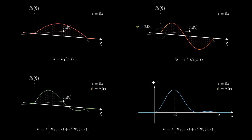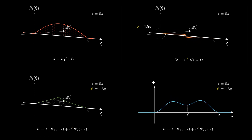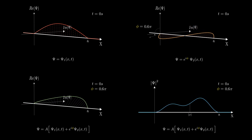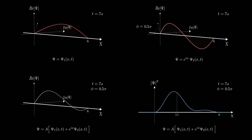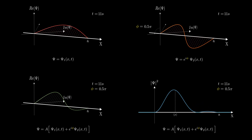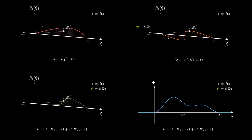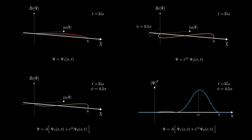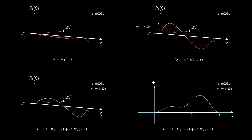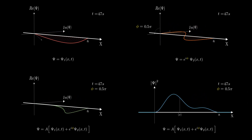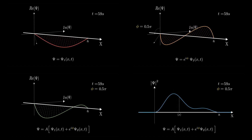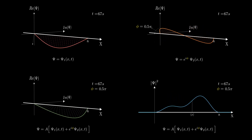Now let's fix phi at π/2 and let time evolve. With this phase, the interference pattern is asymmetric, and the expectation value starts to oscillate. This is because the time evolution introduces a phase difference proportional to the energy difference, E₂ minus E₁, which drives the oscillations in the probability density.